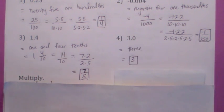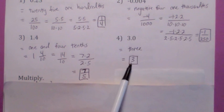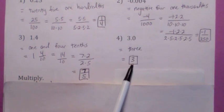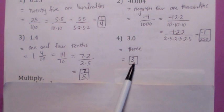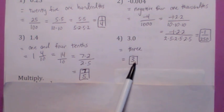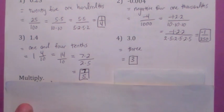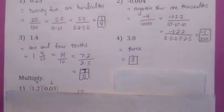I should mention this because it comes up later: when you see a number and you don't see a decimal next to it at the end, there's always a decimal at the end. If there's no decimal written, it's right at the end of the number. That's really important later.